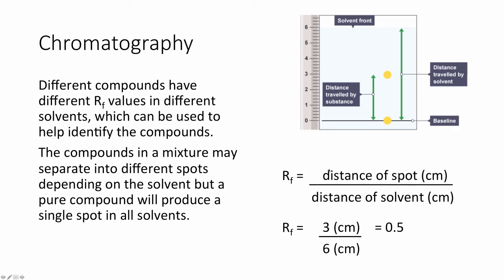To calculate the RF, we measure the distance of the spot from the centre of the spot to the base pencil line that's drawn, divided by the distance that the solvent's moved from the baseline to where the chromatogram ended. For example, the RF value of this spot would be 3 divided by 6, which is 0.5. Now, it doesn't matter how large your chromatogram is because this is a ratio.